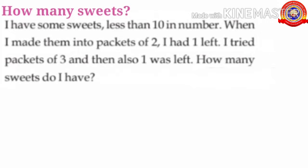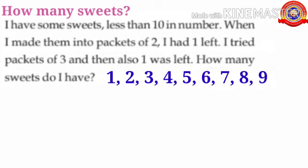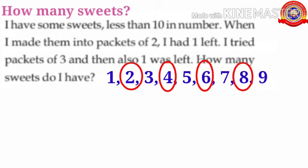Children, which are the numbers less than ten? Yes, one, two, three, four, five, six, seven, eight and nine. Here, she made the sweets into packets of two and she had one left. See children, which are the multiples of two? Yes, two, four, six and eight. So children, when we grouped into these numbers, there is no one left.